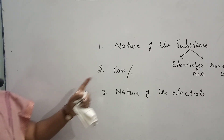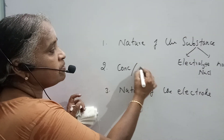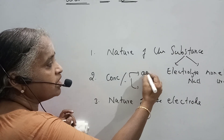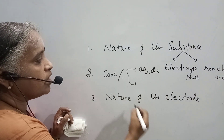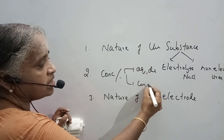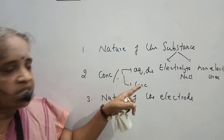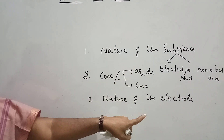The second point is concentration. You can divide this into: aqueous, or what you can call a dilute electrolyte, and the second one is concentrated. Either one of these conditions means the products may vary.